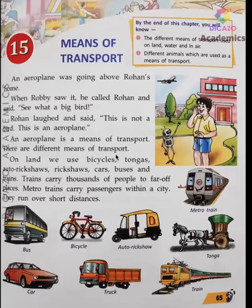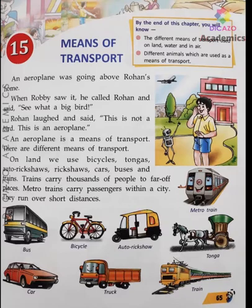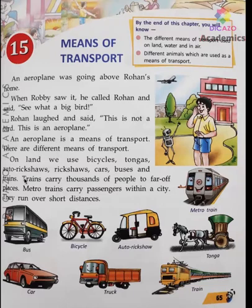There are different means of transport. On land, we use bicycles, tongas, auto rickshaws — you see many of these on the road and some of you use them to go to school. Some children also use bicycles. We also have rickshaws, cars, buses on the road, and trains. These are some of the means of transport we see on the road.